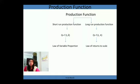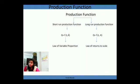The short-run production function is associated with the Law of Variable Proportion, and the long-run production function is associated with the Law of Returns to Scale. These two laws explain how total output changes with changes in factors of production. In the short run, when only labor changes, the Law of Variable Proportion explains in what proportion total output changes. In the long run, when both labor and capital change, the Law of Returns to Scale explains how output changes.